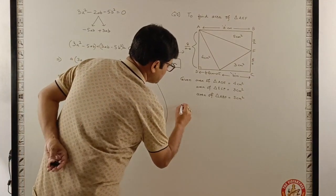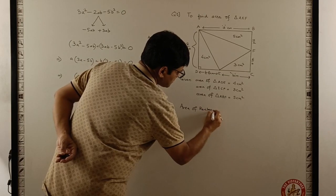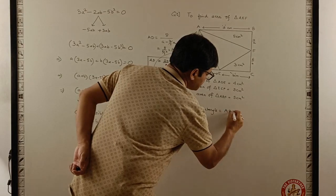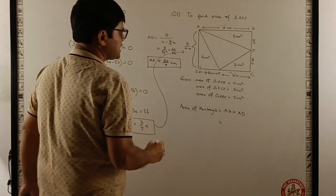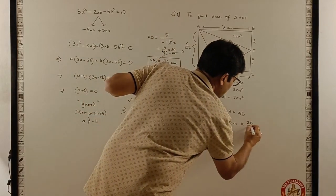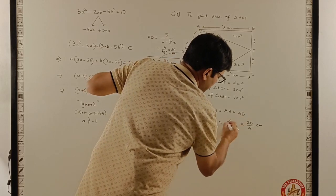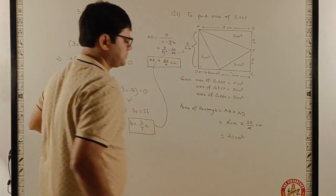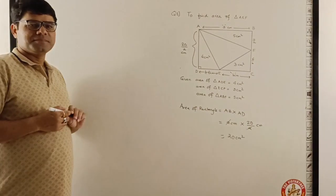What is area of rectangle? Area of rectangle is length AB into breadth AD. Now AB is A centimeter and AD is 20 upon A centimeter. So A and A can be cancelled. This is 20 centimeter square. I hope this part is clear.